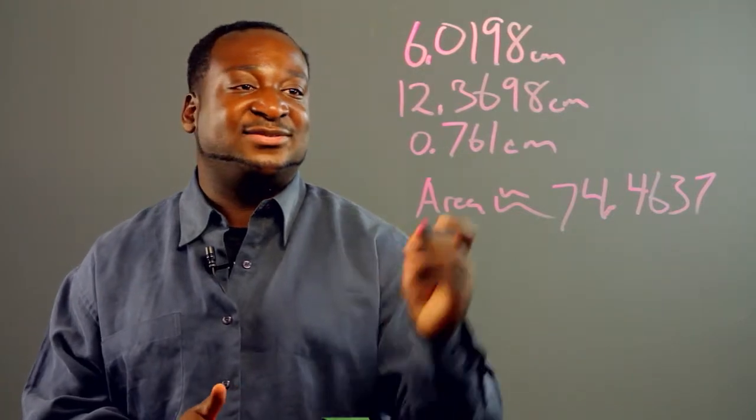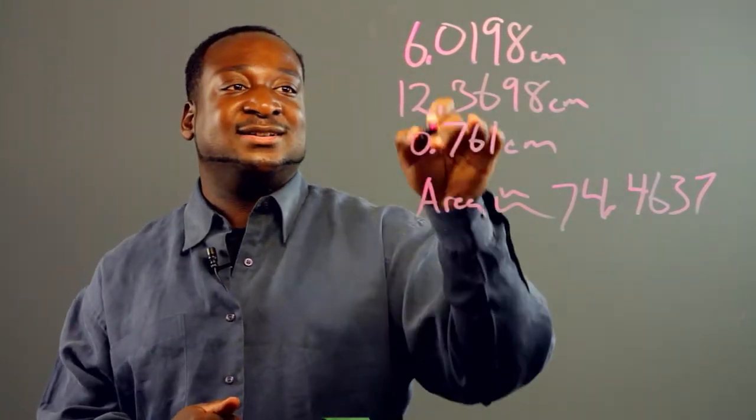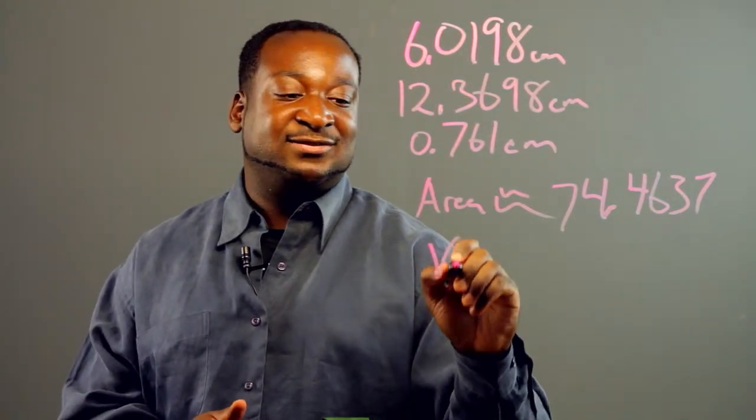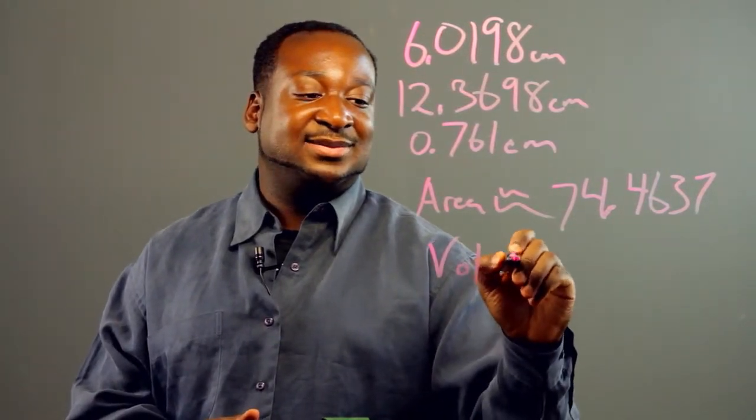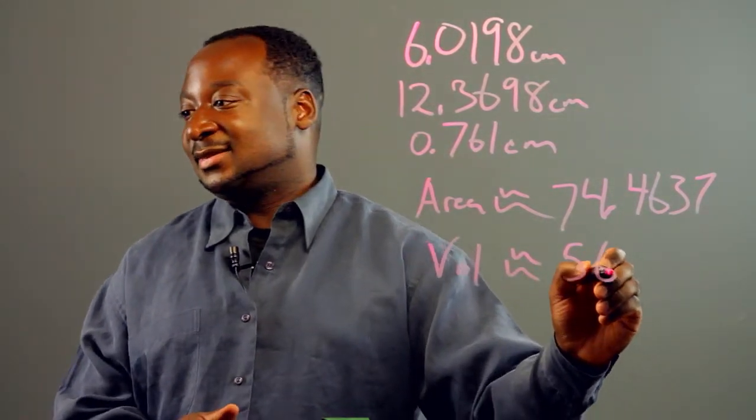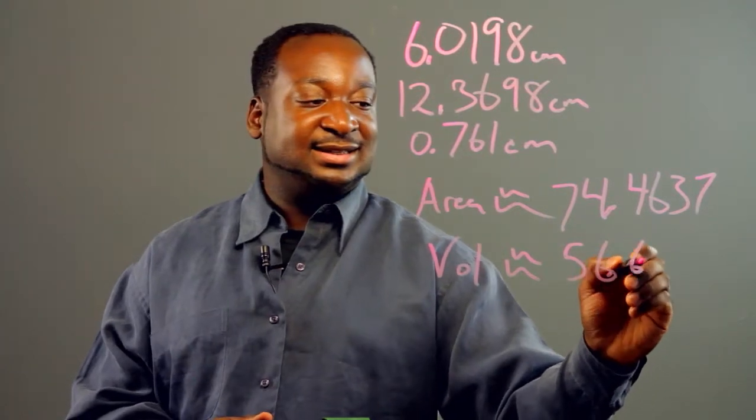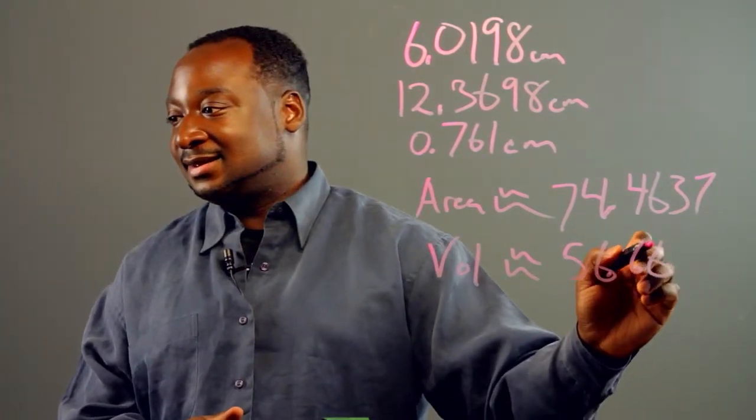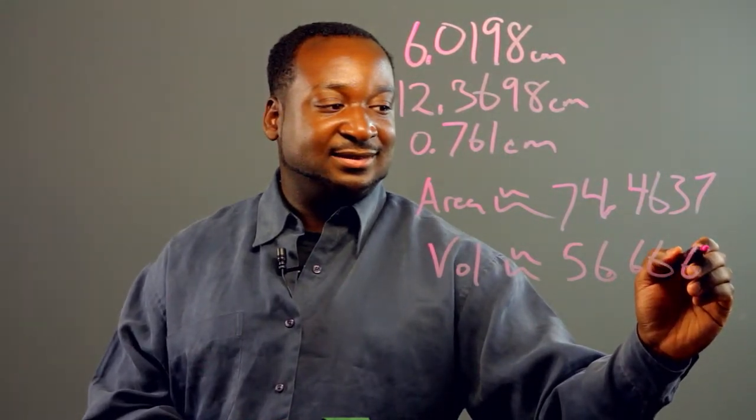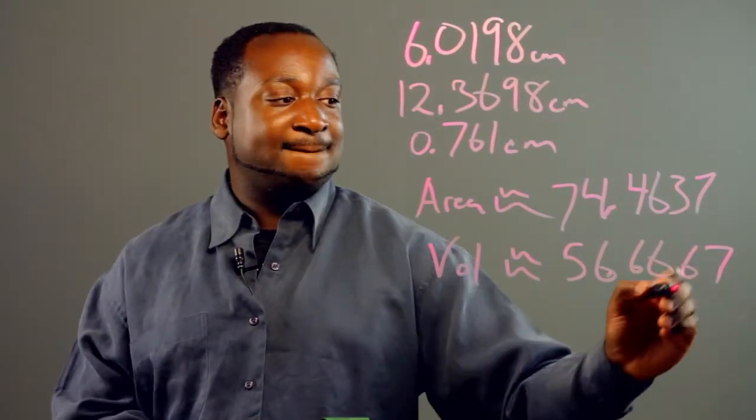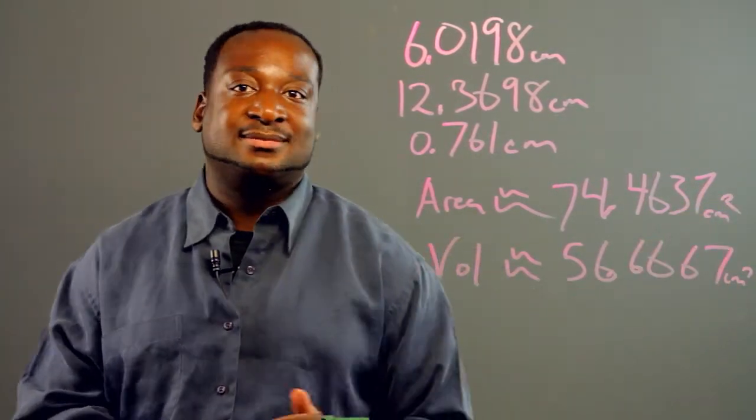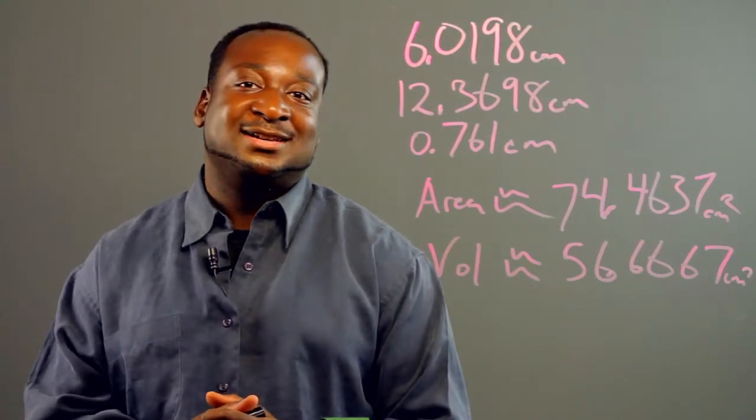And then I would have them calculate the volume of the entire phone, multiplying all of the three sides, so the volume is about 56.6667. And that's a fun activity for sixth graders.